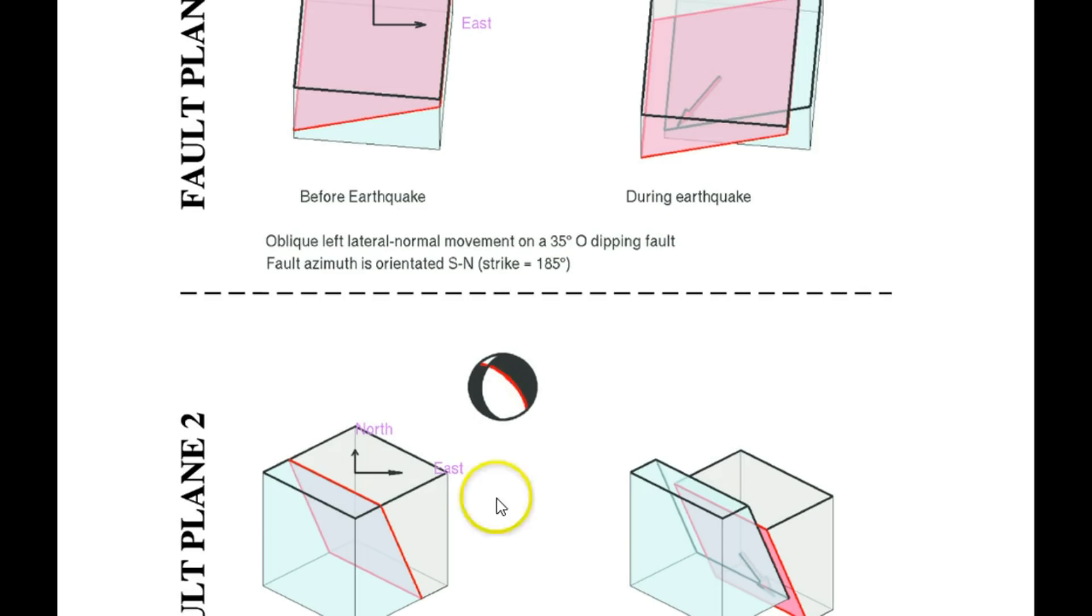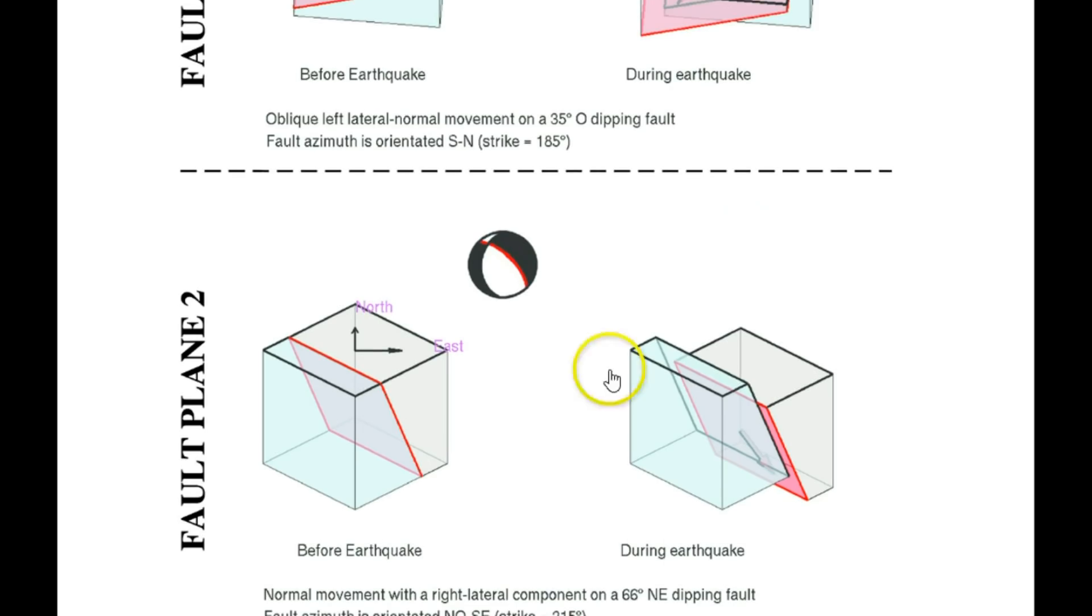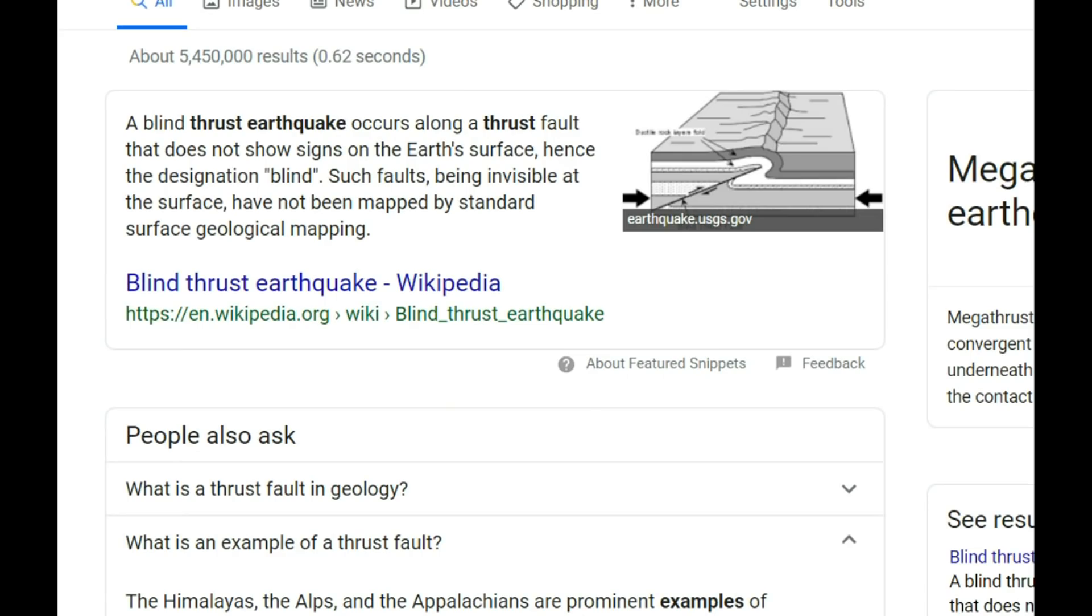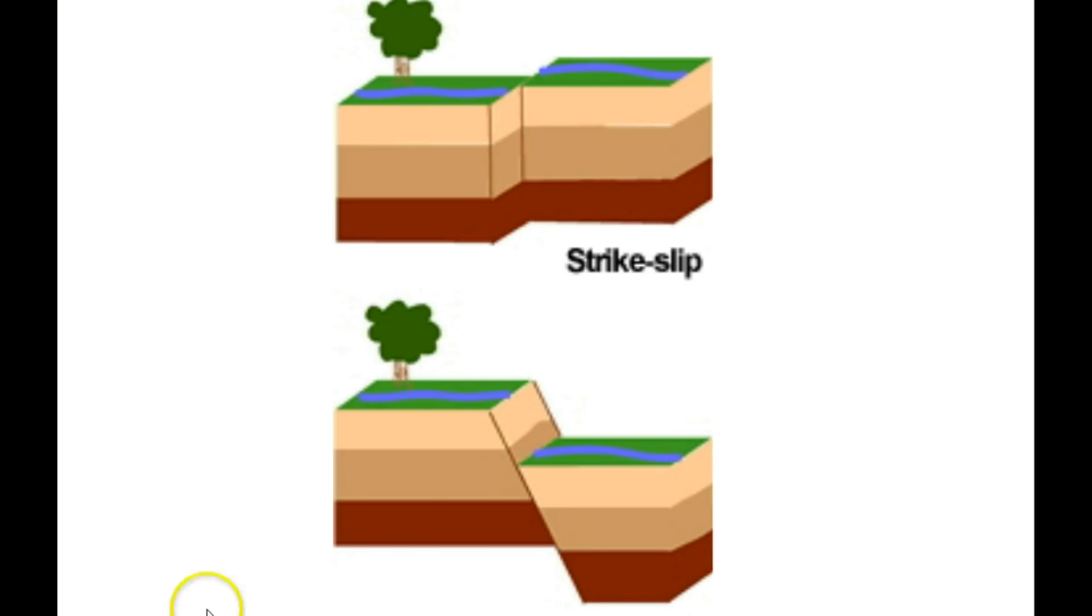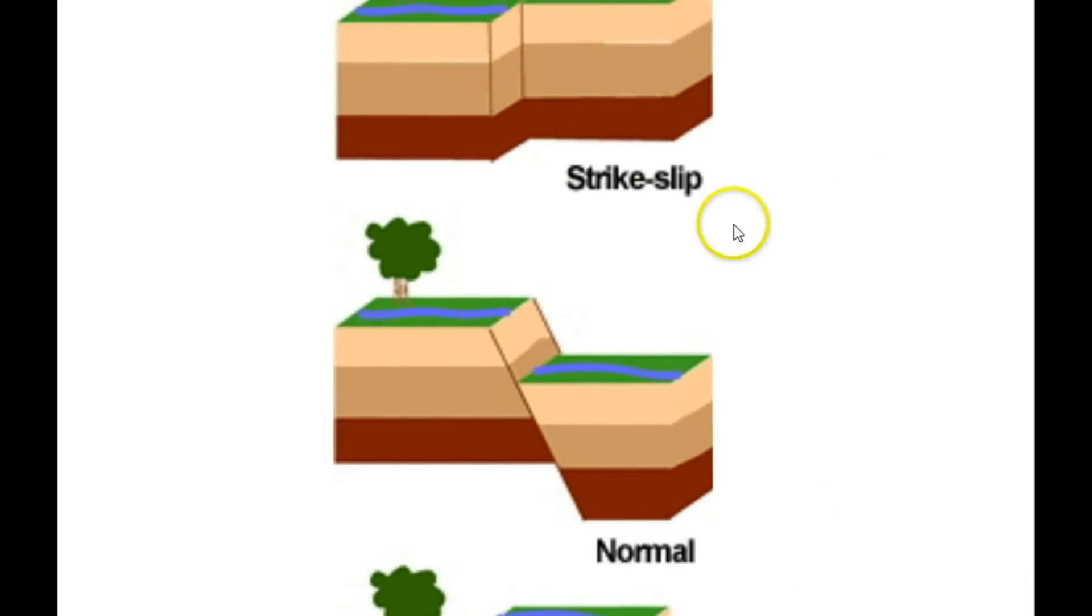It rose up and it moves slightly south. It could have been a blind thrust earthquake, which is an earthquake that doesn't rupture the ground, you just have uplift. And if you can see that image there, this is from Wikipedia. Here we have some other examples of earthquakes. We got the strike slip, we have a normal and then the thrust.